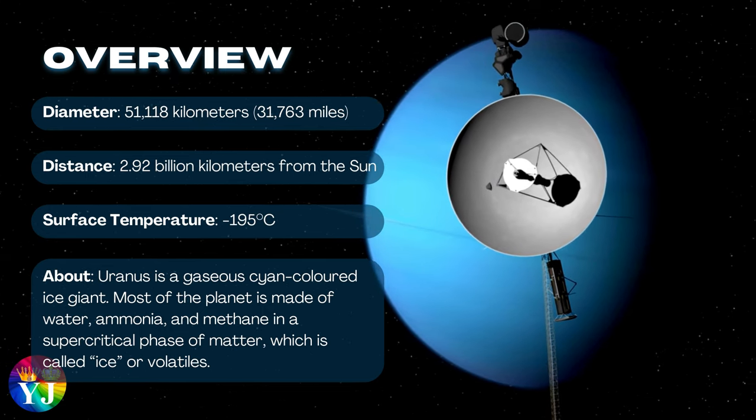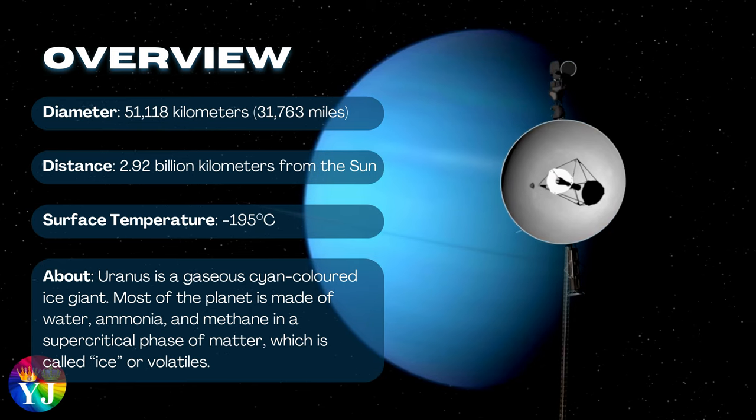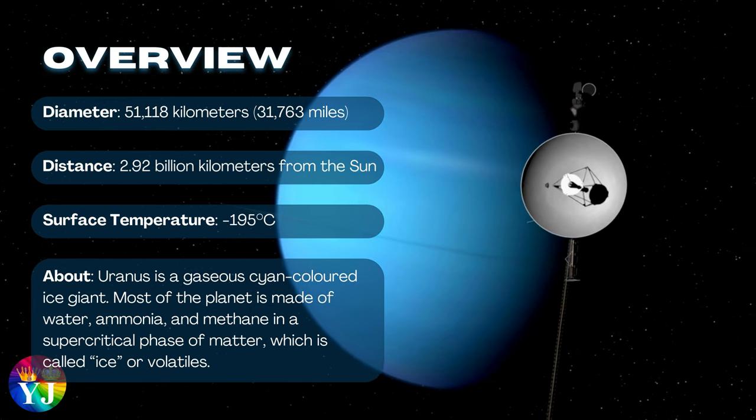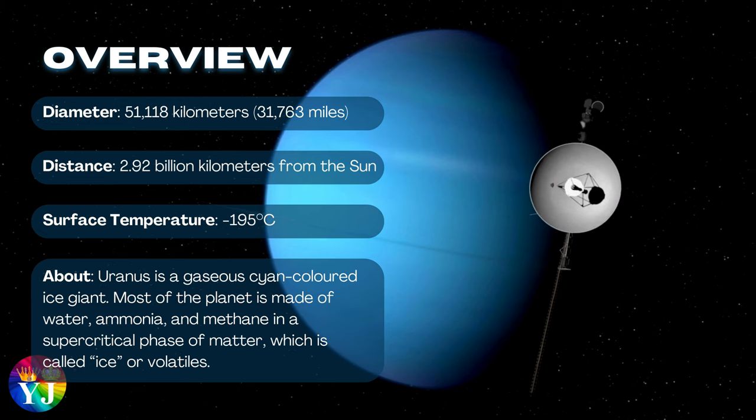About Uranus: Uranus is a gaseous cyan-colored ice giant. Most of the planet is made of water, ammonia, and methane in a supercritical phase of matter which is called ice or volatiles.